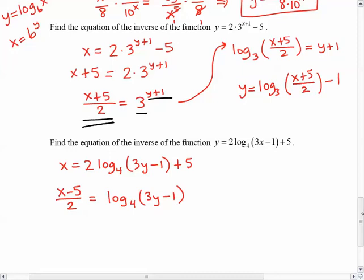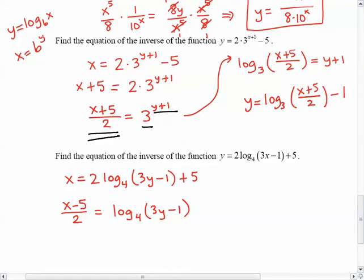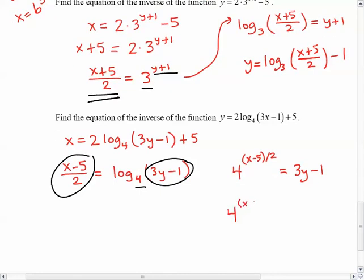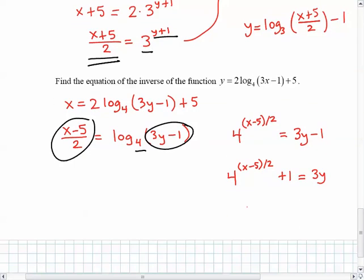And so again, here comes the magic part where I convert forms. So in this case, here's my b. In this case, this is actually my x, and this is my y. So if I were to rewrite it as exponential, it would be 4 to the x minus 5 divided by 2 equals 3y minus 1. And then I would just move the 1 over and divide by 3. So if I move the 1 over, and then instead of dividing by 3, I'm going to think of it as multiplying by a third. So I'm going to have a third in front of the 4. And then I'm going to have a plus 1 third. It's kind of ugly.